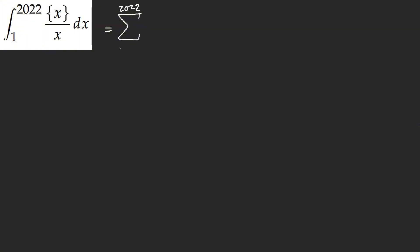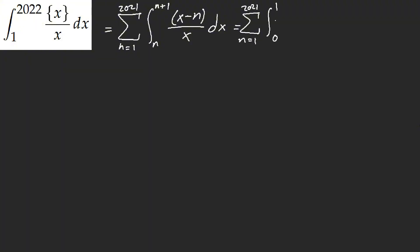That should be 21 actually. What I like about fractional parts is that we can make this a lot more simple. I'm letting u equal x minus n. That's just 1 minus n, u plus n — pretty much. It's no biggie.